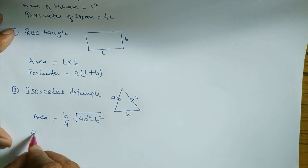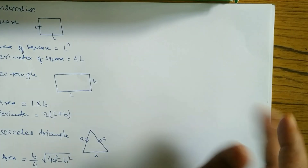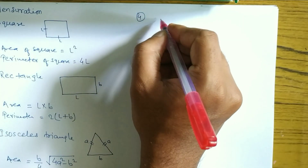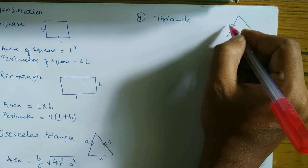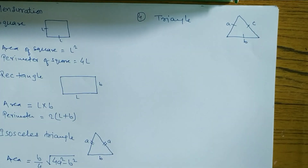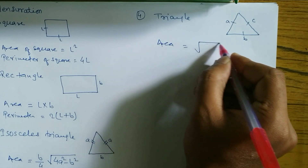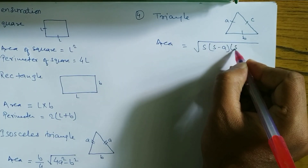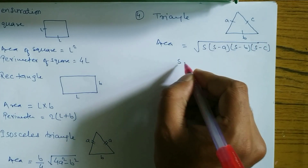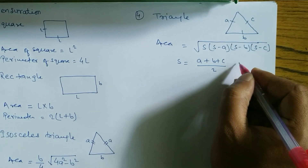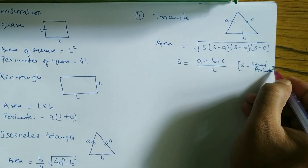Number 4 is the scalene triangle — a triangle where all sides are not equal. Suppose sides are a, b, and c. To find the area we have the formula: √(S(S−a)(S−b)(S−c)), where S means (a + b + c) / 2. S is called the semi-perimeter.